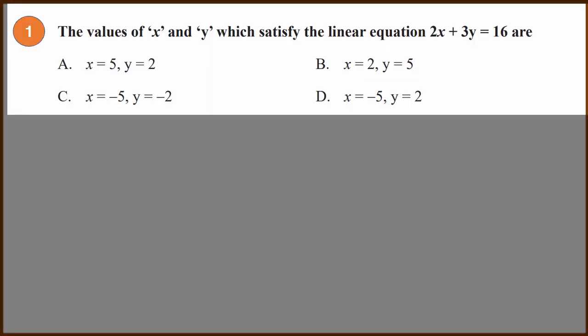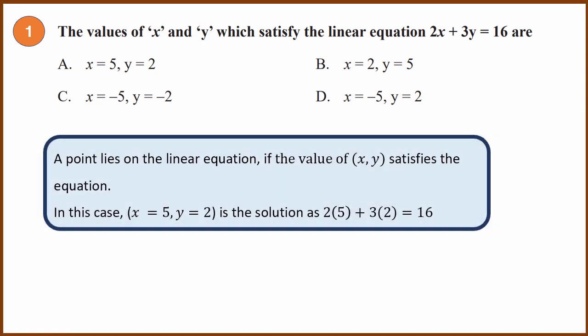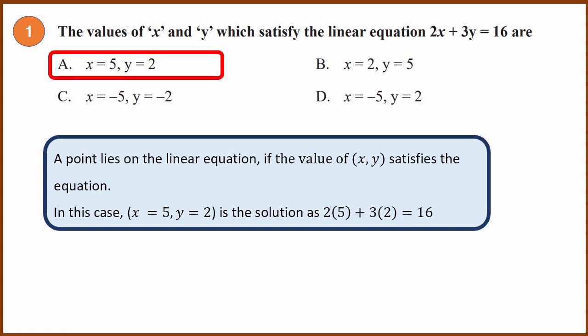First question: find the values of x and y which satisfy the linear equation 2x + 3y = 16. There are four choices. This is a simple question — you just substitute the values and find out which one lies on the equation. A point lies on the equation if the values of x and y satisfy it. Only x = 5 and y = 2 satisfies. So the answer is A.